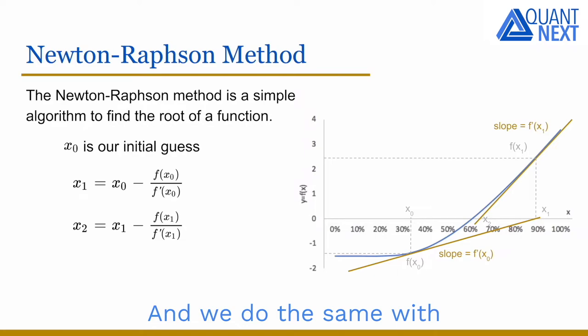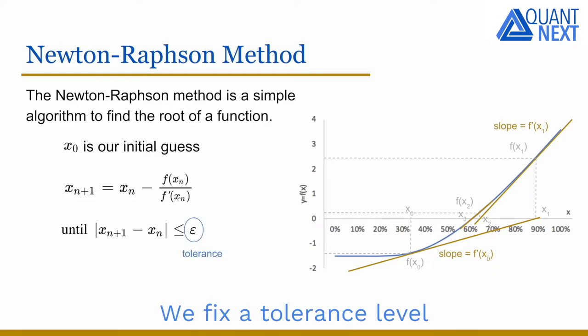And we do the same with this second guess, the third guess, and so on. We fix a tolerance level and we iterate the algorithm until the difference between two consecutive estimation points is below this level.